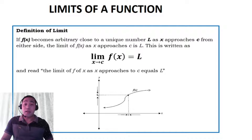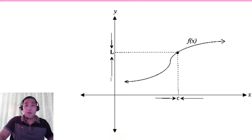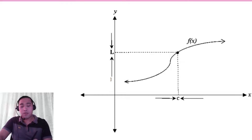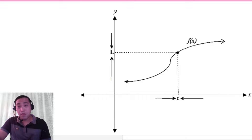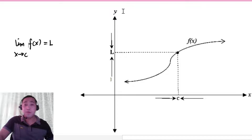And this is written in this notation, and read as: the limit of f of x as x approaches C is equal to L. This is the illustration of the function as x approaches C, and it is denoted by: limit of f of x as x approaches C is equal to L.